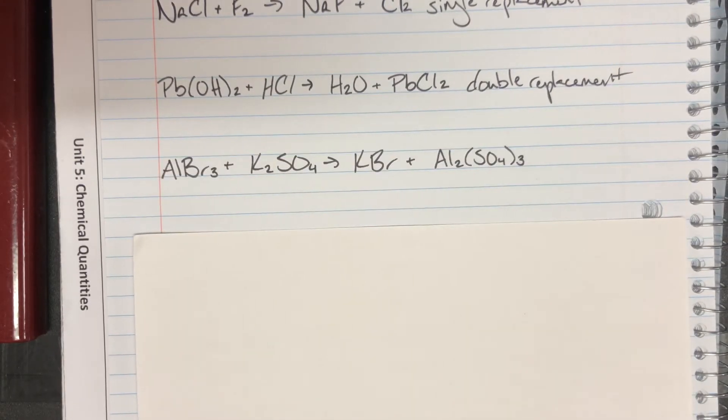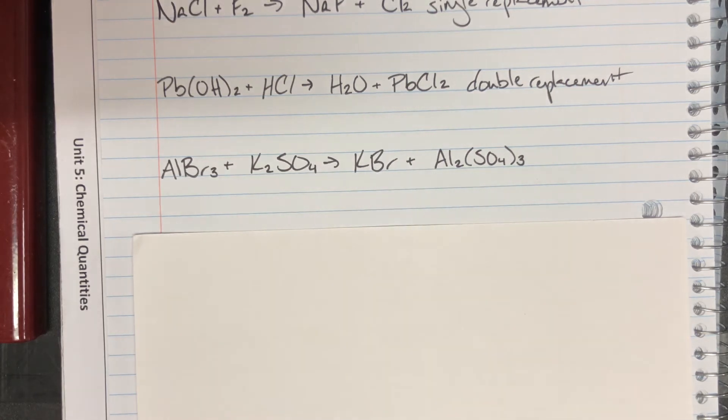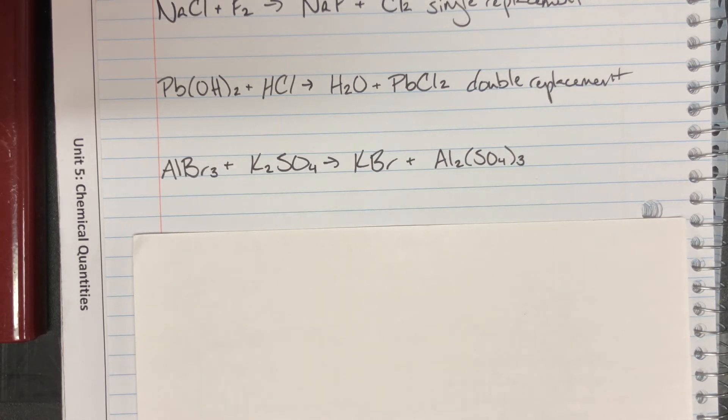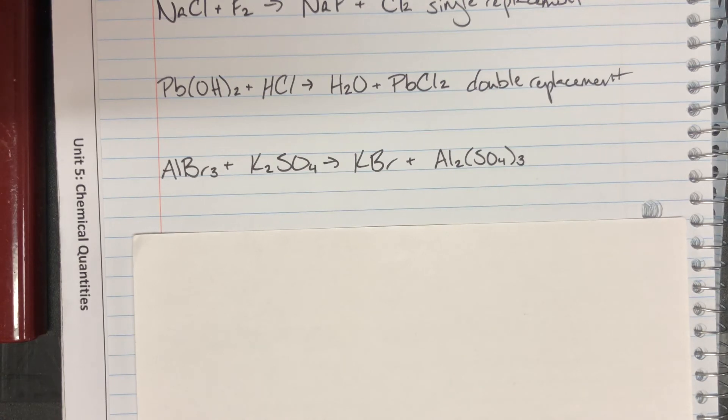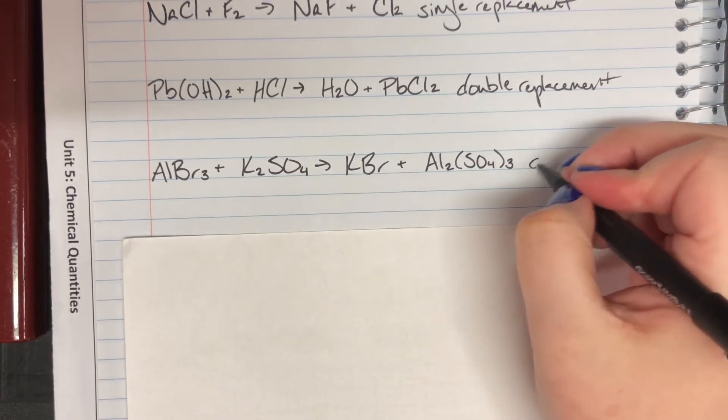So next, I have aluminum bromide adding with potassium sulfate going to potassium bromide and aluminum sulfate. So here again, I cannot be a synthesis reaction. I have a plus on the right-hand side. I also cannot be a decomposition reaction because I have a plus on the left-hand side. I'm not going to be a single replacement reaction because neither of my reactants are single elements alone. And I cannot be a combustion reaction because I have no hydrocarbons, no oxygen as my reactant, and no carbon dioxide or water as my product. So this, again, must be a double replacement reaction.